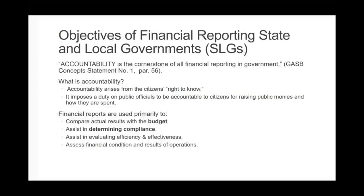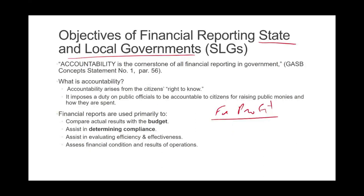Hello and welcome to this session in which we look at the objectives of financial reporting for state and local government. It's worth looking back at the financial reporting objective for for-profit. When we say financial reporting objective for for-profit, what do we mean? It means when we report financial information for a business, the objective is to provide investors and creditors information to make a business decision. That's the purpose of financial reporting when it comes to businesses.